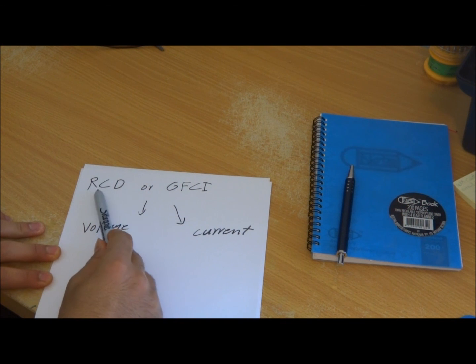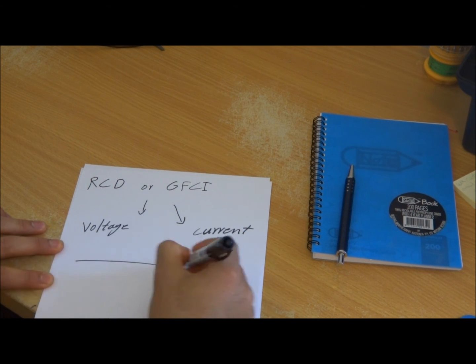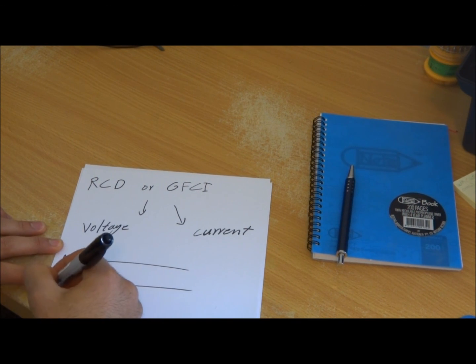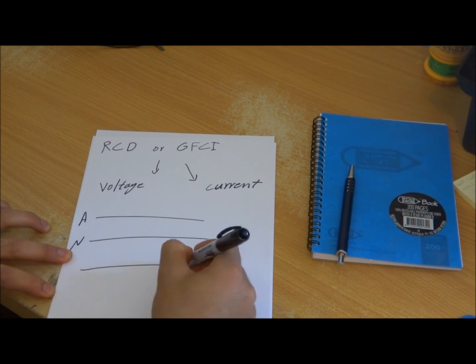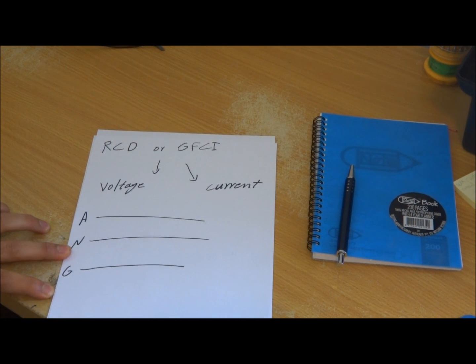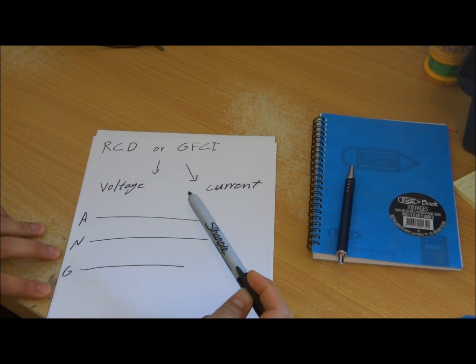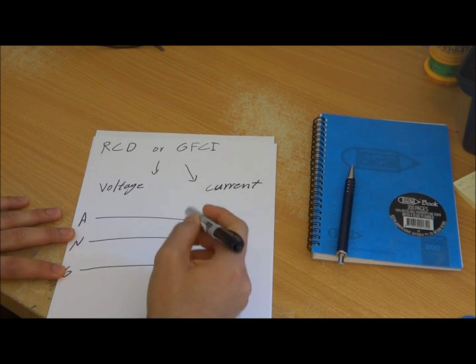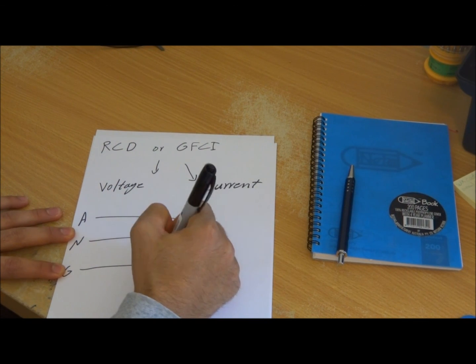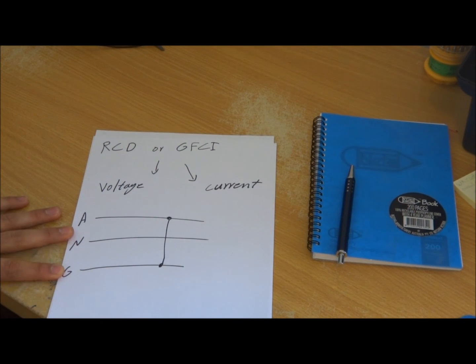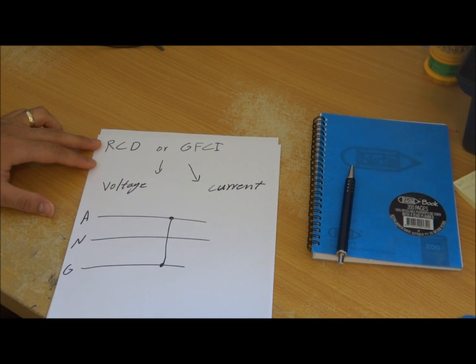And these RCDs, what they do, they monitor the current. If we have active, neutral, and let's say we have a ground as well, these RCDs monitor the current and look for any sort of imbalance in the system. So if there is any sort of leakage from active to ground, smallest leakage, the RCD will detect it and will trip the unit or the electricity.